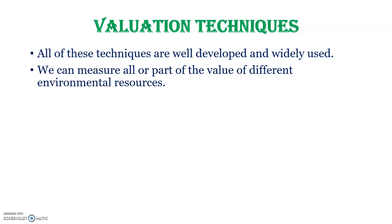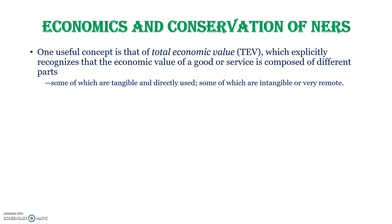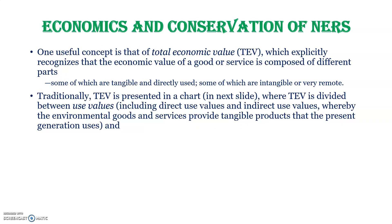All of these techniques are well developed and widely used by economists to value various environmental goods and services. We can measure all or part of the value of different environmental resources. One useful concept is that of total economic value, which explicitly recognizes that the total economic value of a good or service is composed of different parts, some of which are tangible and directly used, and some of which are intangible and very remote. Traditionally, total economic value is presented in a chart where TEV is divided between use value and non-use value.